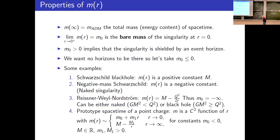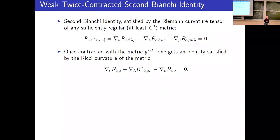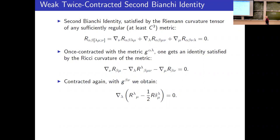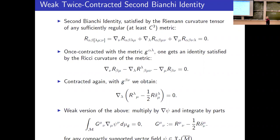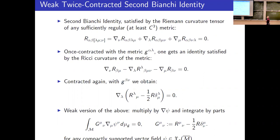Quick review of the second Bianchi identity: you know how you get the identities and contract them to arrive at the twice-contracted version — that last one is the one we are interested in generalizing. The simplest way to do that is to multiply by the gradient of some vector field, integrate by parts, and say that equals zero for all smooth vector fields compactly supported on the manifold, including its boundary where the singularity is.